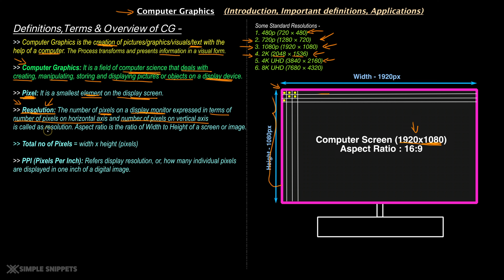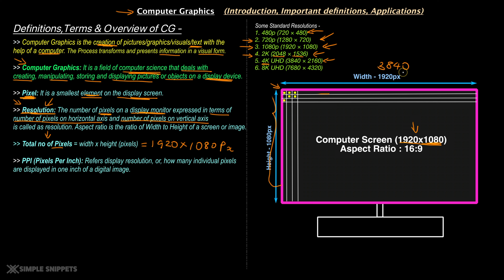Now let's move on to the total number of pixels. When you know the width and height in pixels, the total number of pixels is essentially the entire area — and area of a rectangle is width times height. So for this screen, it would be 1920 into 1080 pixels. If this screen had a higher resolution, like a 4K screen with width 3840 and height 2160 pixels, the multiplication of 3840 into 2160 would give a larger value compared to 1920 by 1080.